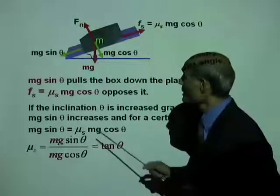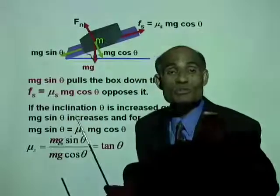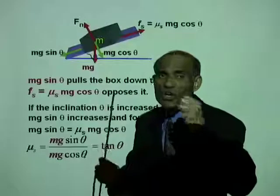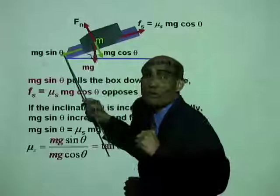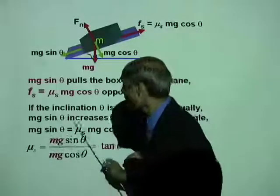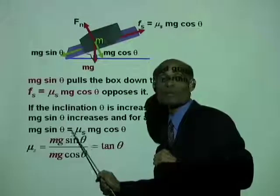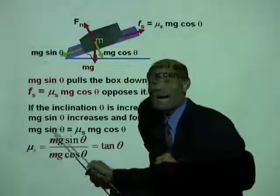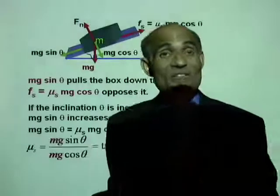mg and mg cancel, and sin theta divided by cos theta is tan theta. So if you want to find the coefficient of static friction between two surfaces, keep increasing the angle of inclination until the block just begins to break loose — that means the downward force just balances the frictional force opposing motion. At that particular angle, mg sin theta equals mu S mg cos theta, so mu S equals tan theta. That is a very important concept.